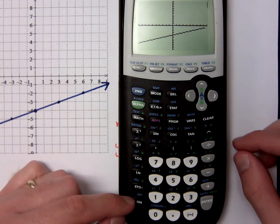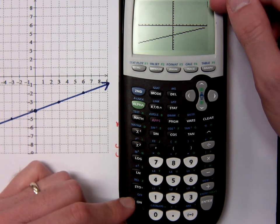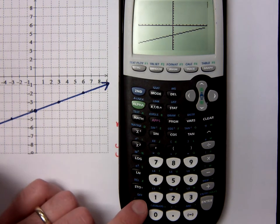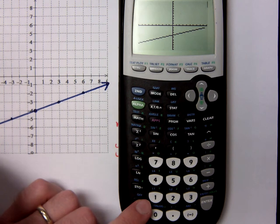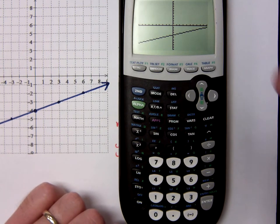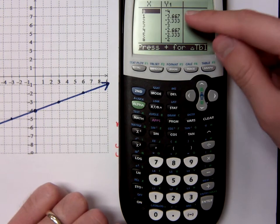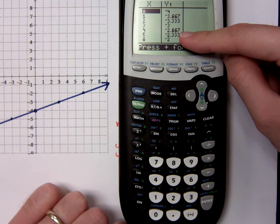If you press the on button, that's an interrupt command. So if your calculator is doing something that's taking too long, pressing on will just cut it off and stop it right there. Now, if I look at my table of values, there are some really unusual numbers showing up, but you can change the way things look.